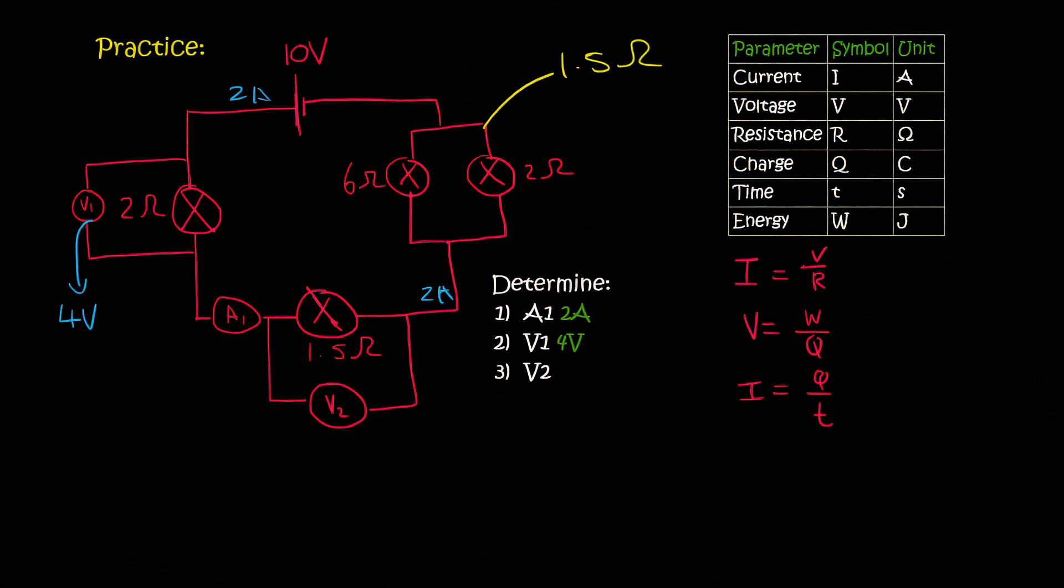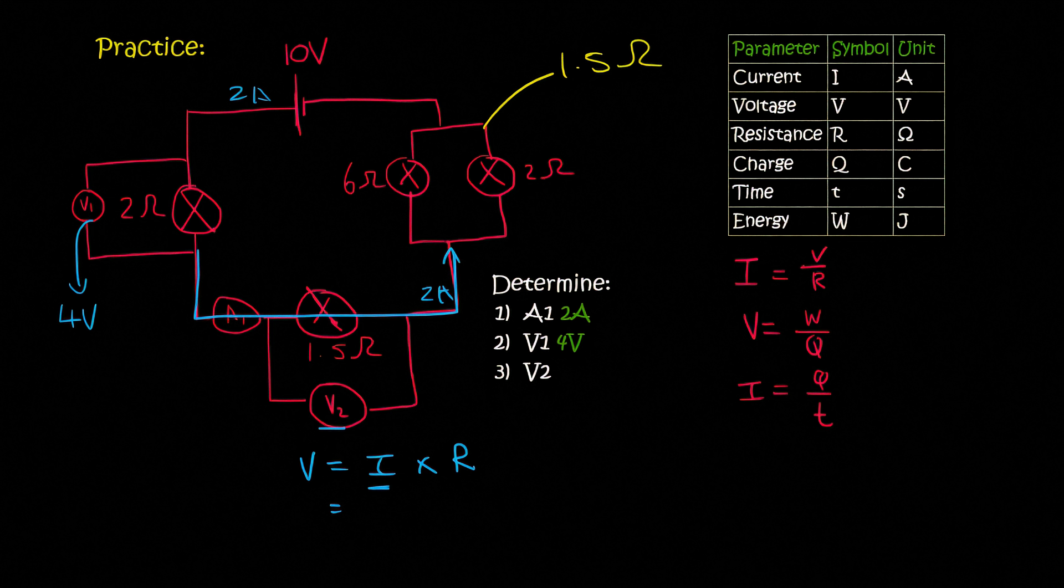The next question is for V2. So V2 is a voltage, and so V is equal to I times R. Now the current flowing over there is still part of the main circuit. And so over here, it's still going to be 2 amps.